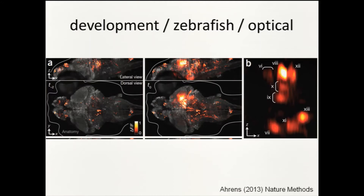Whole brain patterns of activation can be seen going from baseline to a stimulated state with about one second resolution. And what's really nice is it's microscopy — the spatial resolution is such that from these hundred thousand neurons you can see individual neurons firing. It's just kind of amazing.